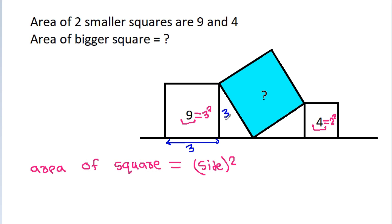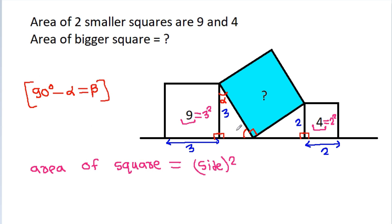The side length here will be 3, and the side length here will be 2. These angles will be 90 degrees. Suppose this angle is alpha, then this angle will be 90 degrees minus alpha. Let 90 degrees minus alpha equal beta. Then this angle is beta, and the next angle will be 180 degrees minus 90 degrees minus beta, which equals alpha. And this angle will be 90 degrees minus alpha, which equals beta.